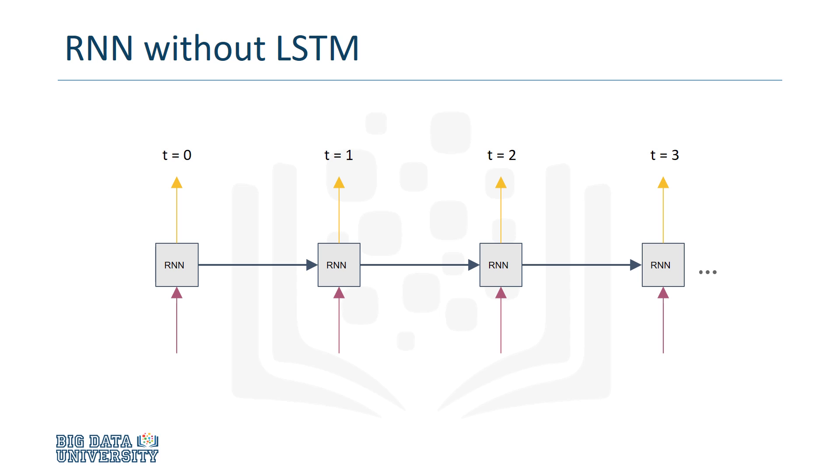This is what a recurrent network would look like if we unfolded it at each time step. The LSTM cells exist between the time steps in the network's flow. So the network's output can be input into the LSTM, and the LSTM can send its output to the net's input in the next time step.